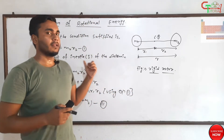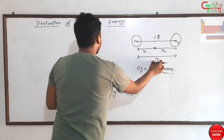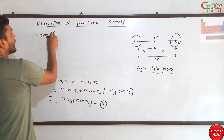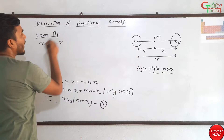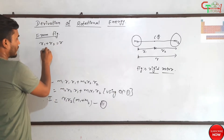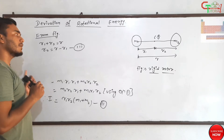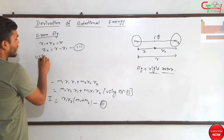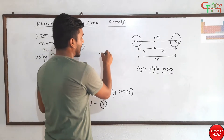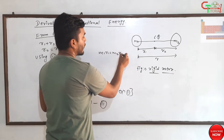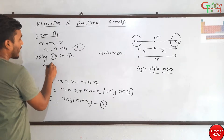Now, from the figure we can write that r1 + r2 = r. From this, let's find the value of r2: r2 = r − r1. Let's call this equation number three. Now using equation number three in equation number one, which is m1·r1 = m2·r2, we substitute r2 with (r − r1), giving us: m1·r1 = m2·(r − r1).